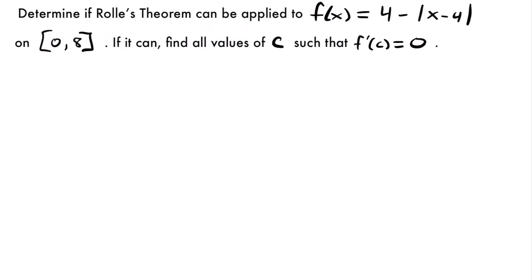Next, we want to determine if Rolle's theorem can be applied to f(x) = 4 - |x - 4| on the interval from 0 to 8. Notice this function has absolute value bars — that's a red flag. Absolute value functions have a point where the function is not differentiable, so we need to check carefully.